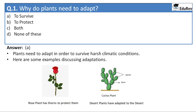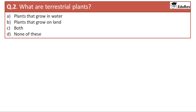Let's come to the next question: what are terrestrial plants? The options are plants that grow in water, plants that grow on land, both, or none of them. The correct answer is plants that grow on land are called terrestrial plants — that means option B.